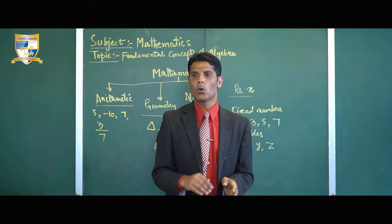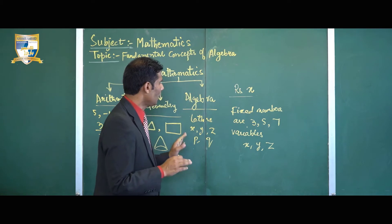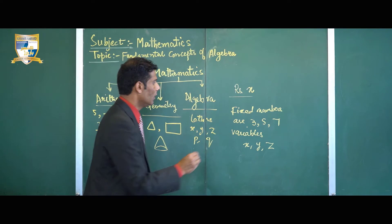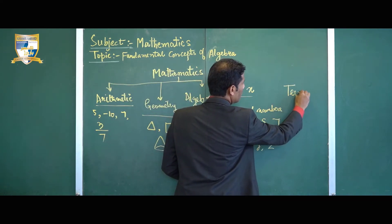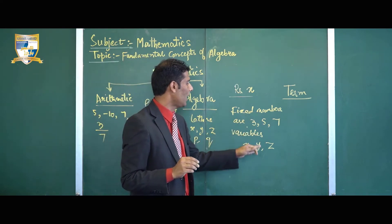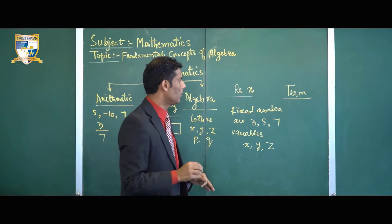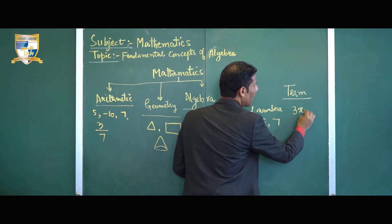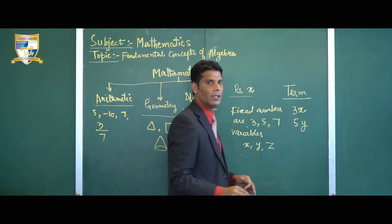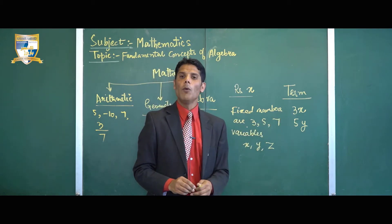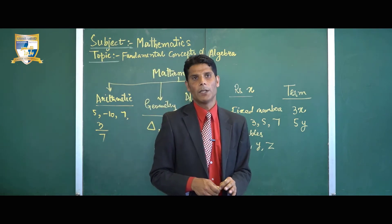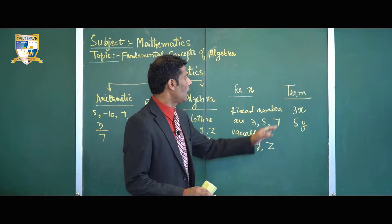Now, what is a term? A term is a combination of fixed values — its constants — and variables. For example, 3x is a term and 5y is a term. So a term is a combination of fixed numbers and variable numbers.